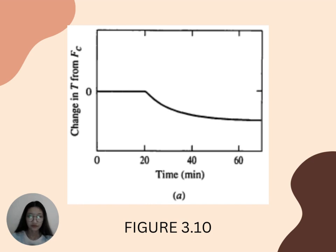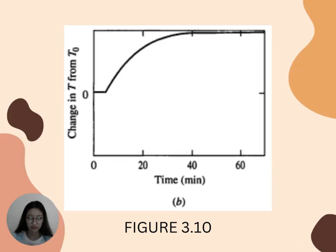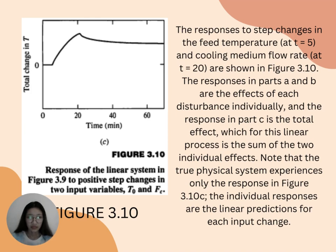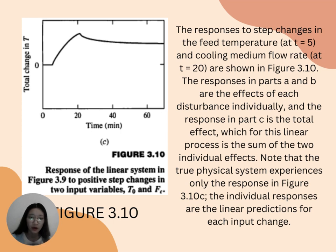Page 14 is a photo of a graph of time in minutes versus change in temperature from Fc, from Figure 3.10. The next image is also a photo of a graph of time in minutes versus change in temperature from T-naught, from Figure 3.10. Figure 3.10 shows the response of the linear system in Figure 3.9 to positive step changes in input variables T₀ and Fc. The responses to step changes in the feed temperature at t equals 5 and cooling medium flow rate at t equals 20 are shown in Figure 3.10. The responses in parts (a) and (b) are the effects of each disturbance individually, and the response in part (c) is the total effect, which for this linear process is the sum of the two individual effects.